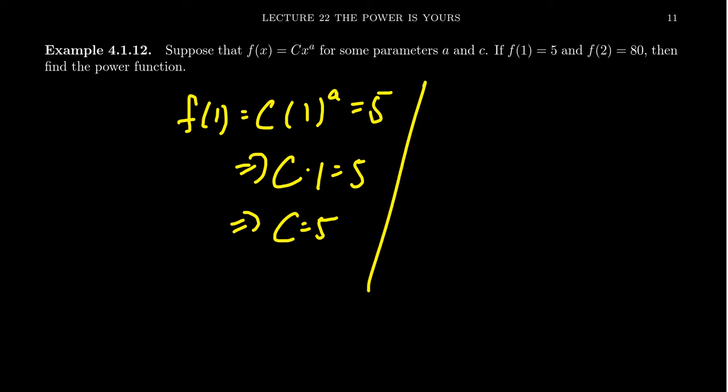Once we have the c value, we then can look at this other value as well. f of 2 equals, well c is 5 times x, we know what x is, it's 2, x to the a. This is equal to 80. And so at this moment we want to solve for the a value which we don't know what it is.